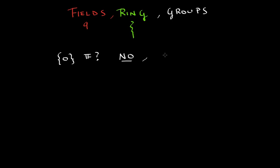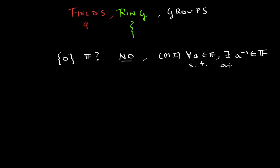You can think about it this way. We know that the multiplicative inverse axiom of fields states that for all a in the field, there exists an a-inverse which is also part of the field, such that if you multiply a times a-inverse you get your identity.